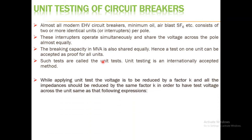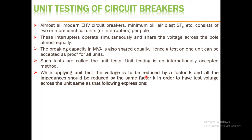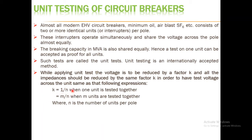While applying unit test, the voltage is to be reduced by a factor of K, and all impedances should be reduced by the same factor K, in order to have the test voltage across the unit equal to the calculated value. K equals 1/N when one unit is tested, and K equals M/N when M units are tested together, where N is the number of units per pole. So this is the factor by which one has to reduce both the voltage and the impedances.